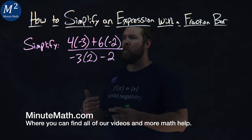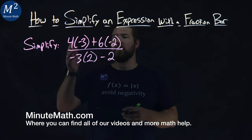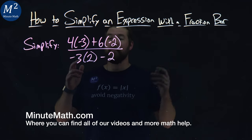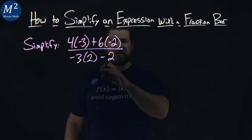We're given this problem right here. Simplify 4 times negative 3 plus 6 times negative 2 over negative 3 times 2 minus 2.